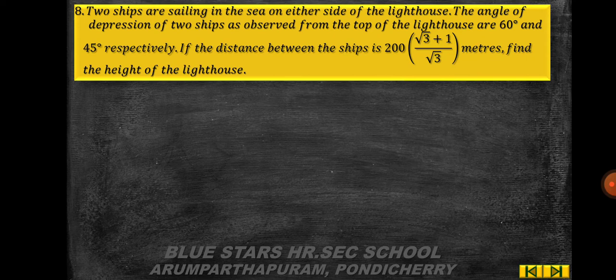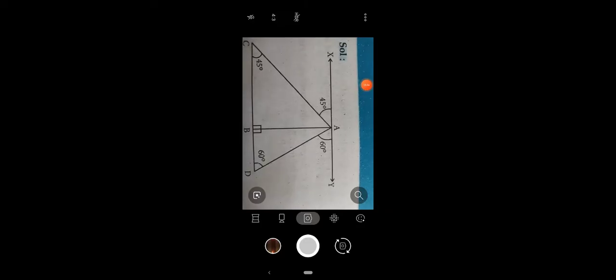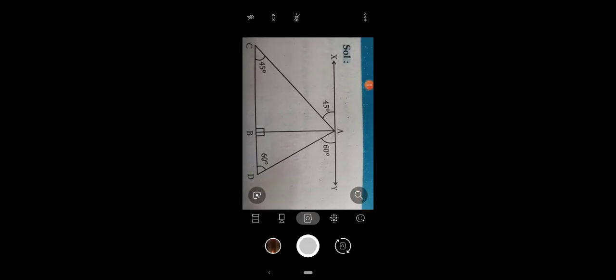Problem 8: two ships on either side of a lighthouse. Angles of depression from the top of the lighthouse are 60° and 45°. Distance between the ships is 200(√3 + 1)/√3 meters. Find the height of the lighthouse. The diagram shows points A, B, C, D.